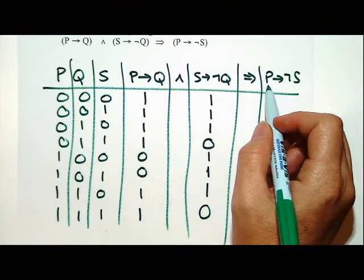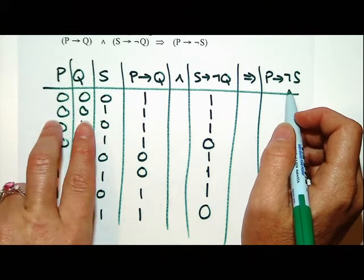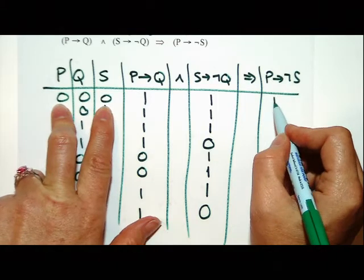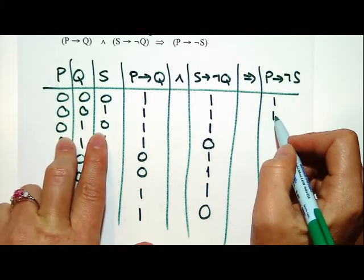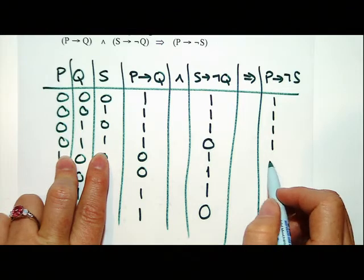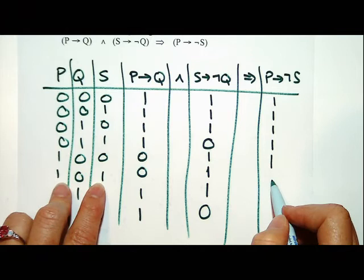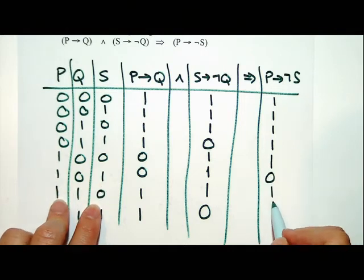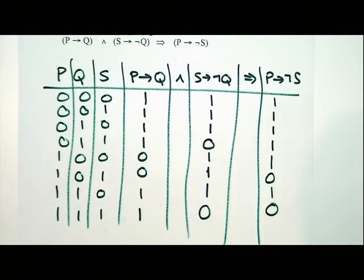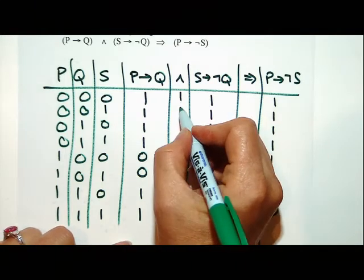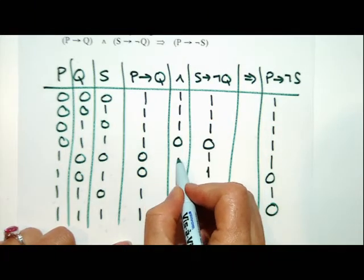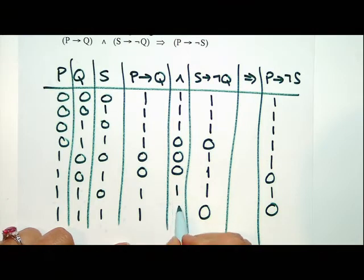Here we're looking for P being false or S being false — either one will make it true. Those first four, P being false, would have made that true. Then we have 1, 0, 1, 0, because that's the opposite of S. Then we need to AND these two columns together. Whenever I get any zeros, remember that ANDs remember zeros.